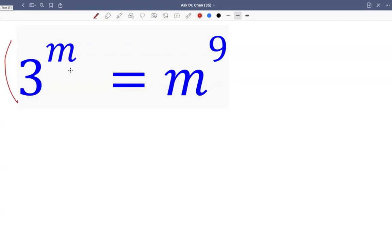So in this case, let's do this. Let's multiply both sides by 1 over 9m. Why I want to do that?